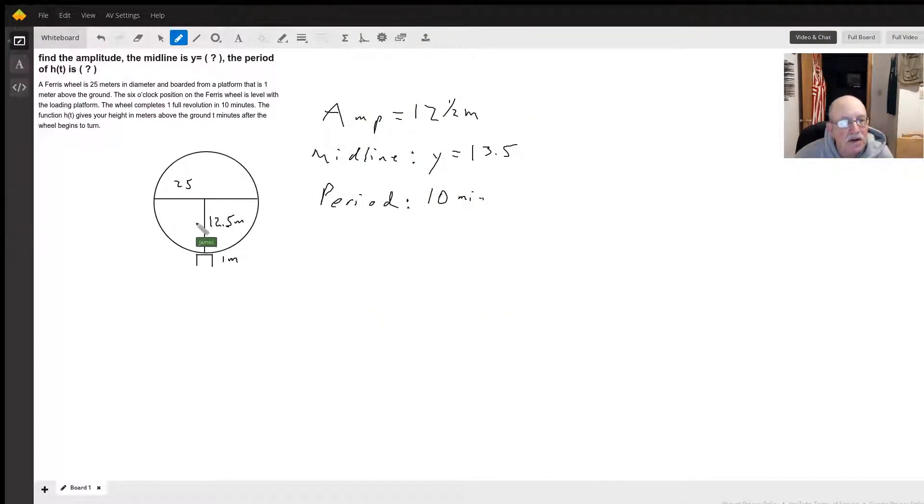Hello. Over on the left we've got a drawing that represents our situation. Diameter of this thing is 25 meters. That means the radius is 12.5 meters.